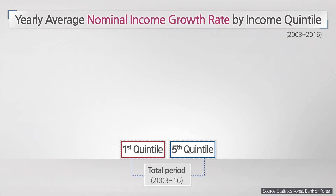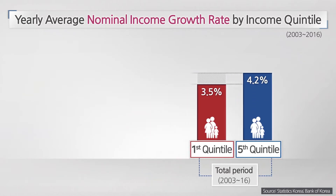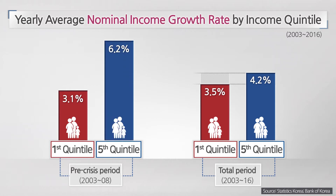On the other hand, nominal income revealed a gap between the quintiles, with the first quintile averaging a yearly growth of 3.5% and the fifth 4.2%. Such a gap in income has been long sustained since the 2008 financial crisis, when the growth rate of the first quintile's average yearly nominal income was just half of the fifth quintile's.